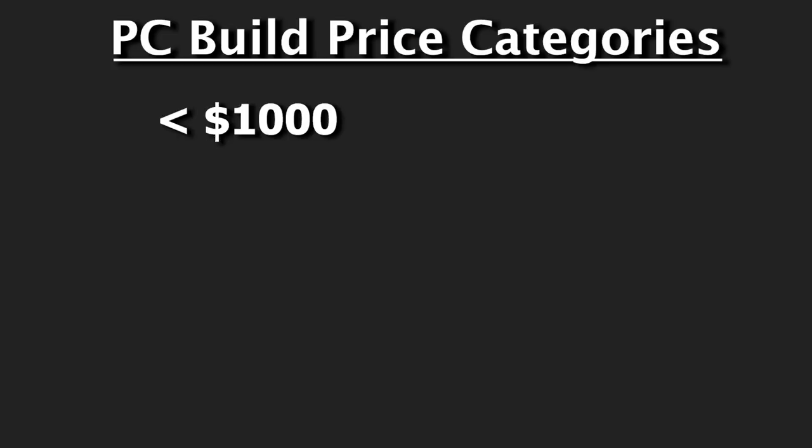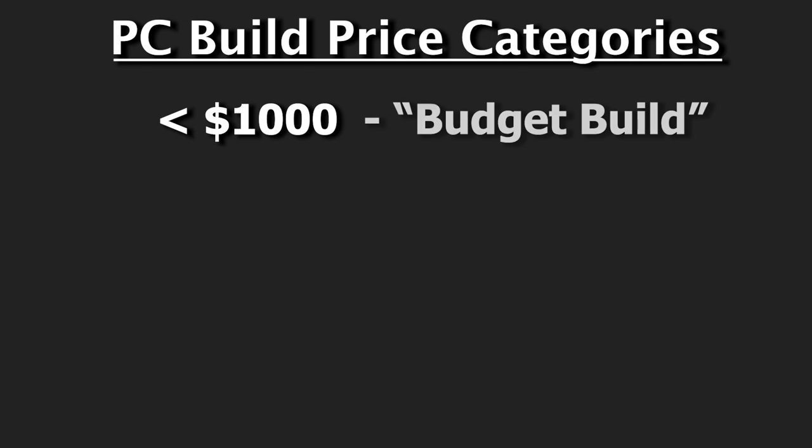So where do we start? The first thing you need to do is set yourself a budget. Decide on a number and then stick with it, or as close as you think you can. I like to group budgets into three major categories. The first group is the under $1,000 category — I like to call this the budget builds. This is for beginners and people who are not sure if they want to be a PC gamer yet. It gives you the smallest risk and investment and allows you to game at decent frame rates.